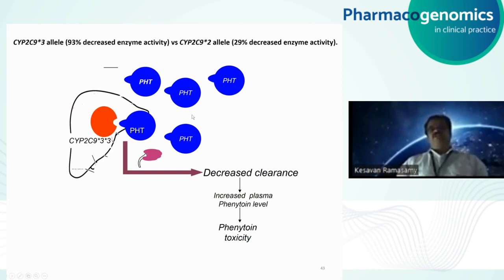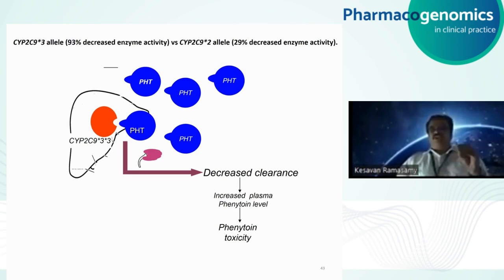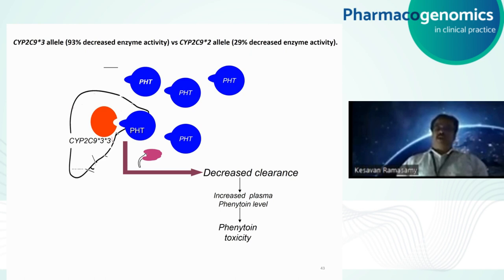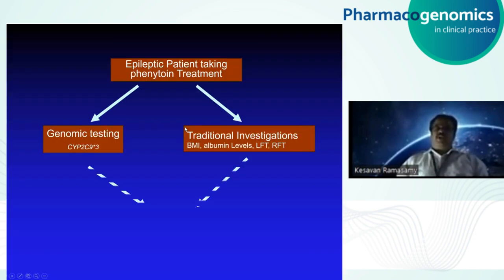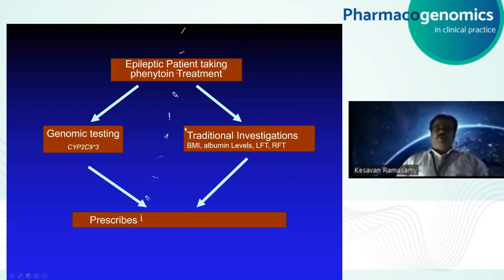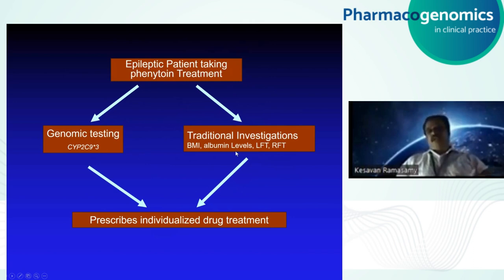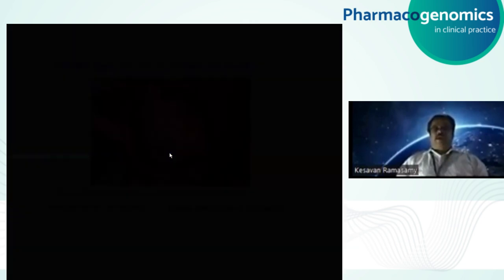What we need to do before prescribing phenytoin is to test for the star 3 variant. In addition, we should perform routine investigations — not only genomic testing. We also need to check albumin levels and perform LFT and RFT to prevent neurological toxicity. An interesting case was seen where a patient who received a normal dose developed important adverse effects and neurological toxicity — her genotype was star 3 / star 3.